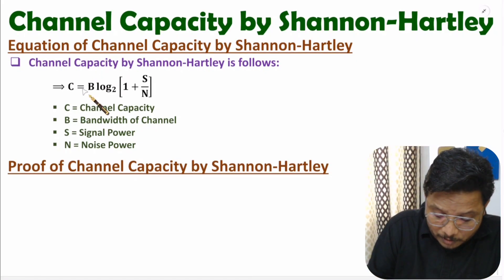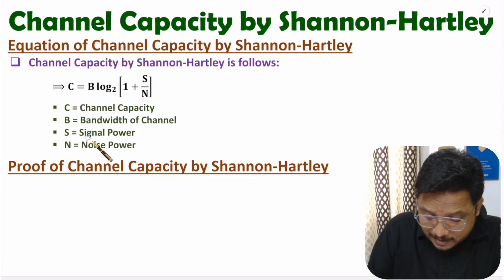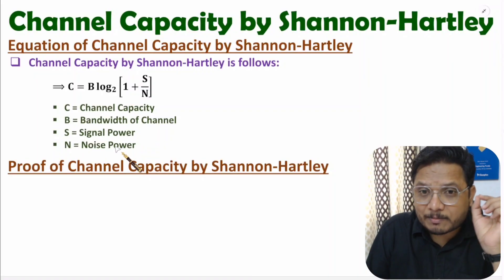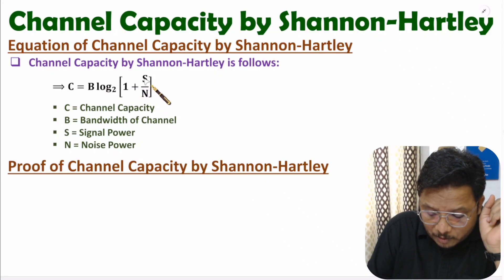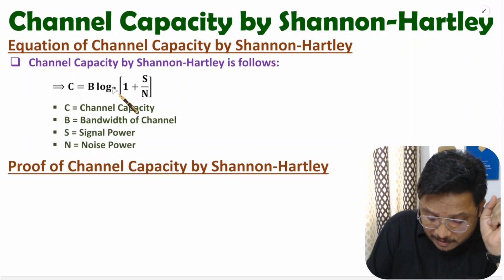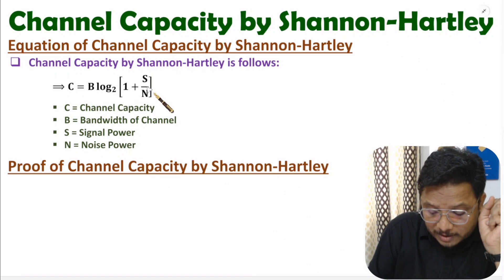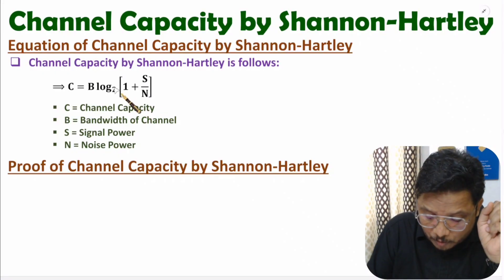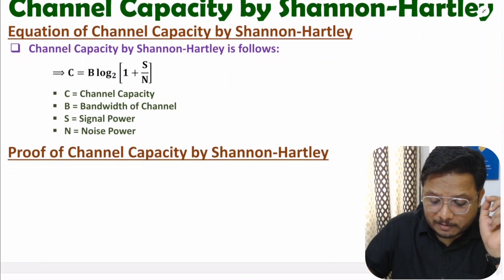Channel capacity C equals B·log₂(1 + S/N), where B is the bandwidth of the channel, S is signal power, and N is noise power. Students often make a mistake when calculating examples using this equation — they consider log(1 + S/N) and forget base 2. Always remember: channel capacity C is B·log₂(1 + S/N). Do not forget base 2, otherwise you will get a wrong answer.